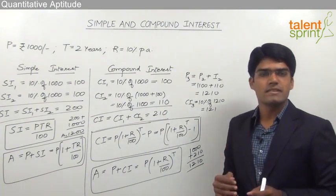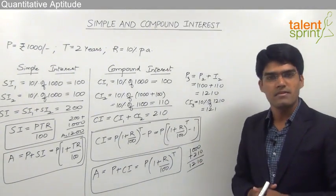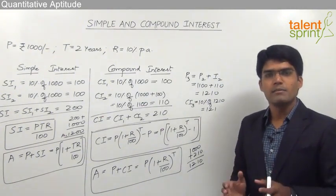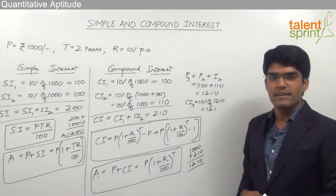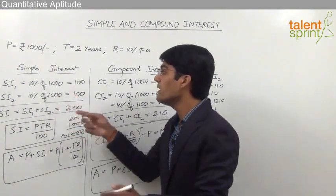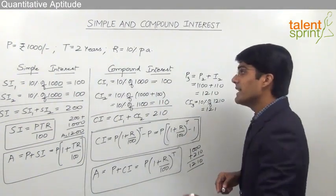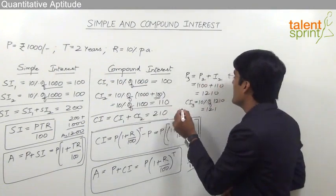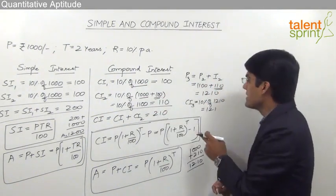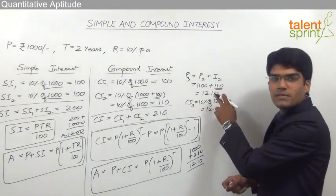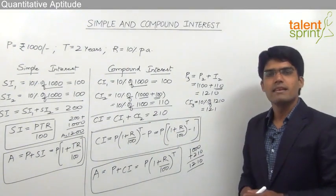In case of compound interest, the principal for the present year is the principal of the previous year plus the interest earned in the previous year. One major difference between SI and CI is that in simple interest, interest is earned only on the principal amount. Whereas in compound interest, interest is earned not only on the principal but also on the interest of previous years — meaning interest compounds. Simple interest is purely interest on the principal; compound interest is interest on principal plus earlier interest.